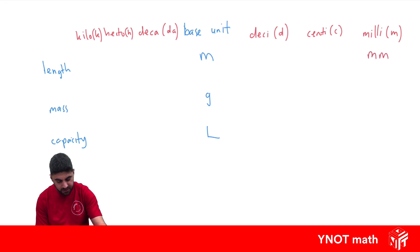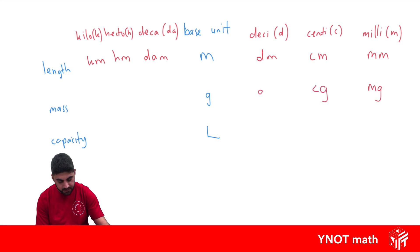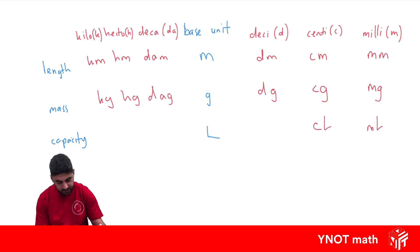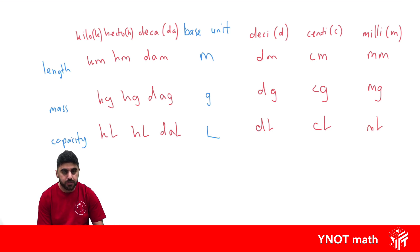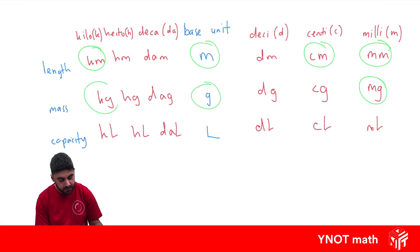So we have millimetre, centimetre, decimetre, metre, decametre, hectometre, kilometre. For mass: milligram, centigram, decigram, gram, kilogram. For capacity: millilitre, centilitre, decilitre, litre, hectolitre, and kilolitre. Some of those sound a little funny because we don't use most of them.